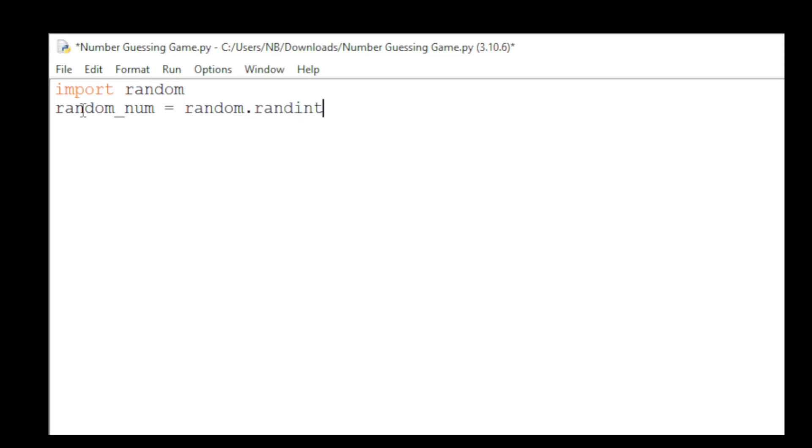Int stands for integer, and then our range, we can do 1 through 20. So this line of code is basically generating a random number between 1 and 20, and storing that value as random_num.